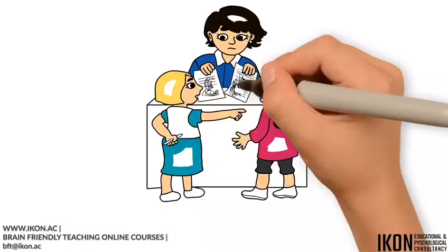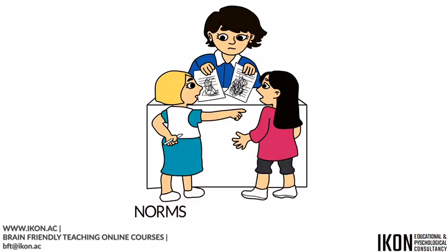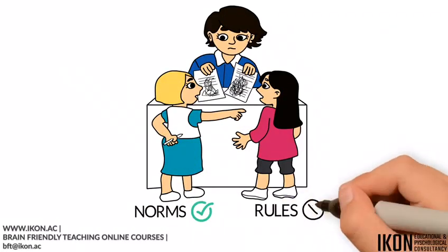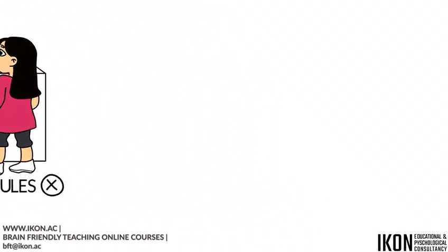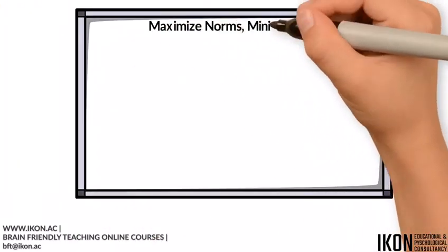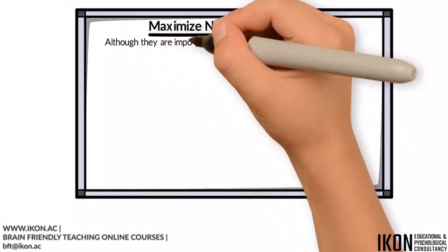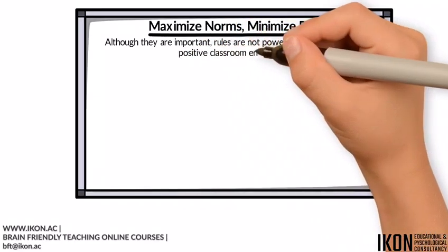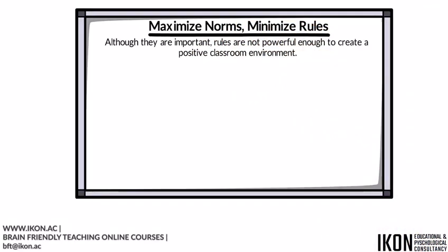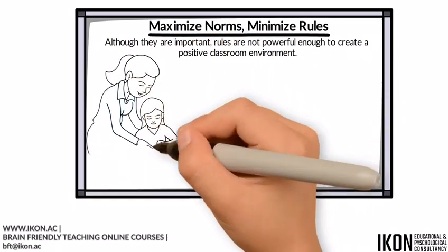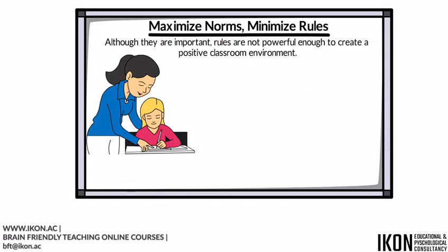Holding students responsible for their own good behavior is very important. Norms, not rules, allow students to become accountable for their own behavior. Maximize norms, minimize rules. Although they are important, rules are not powerful enough to create a positive classroom environment. Norms, while seemingly flimsy, possess greater power to elicit positive classroom compliance. This compliance is not imposed, but harvested through mutual agreement and the feeling of togetherness between the teacher and students.